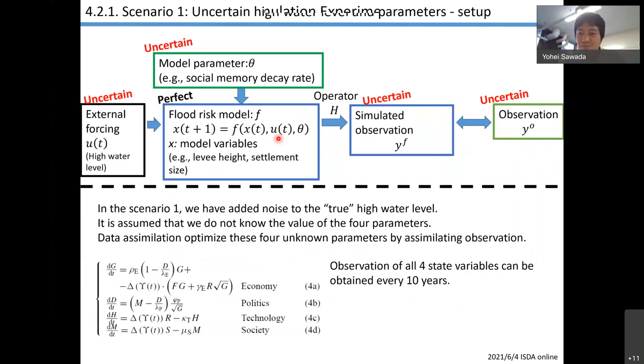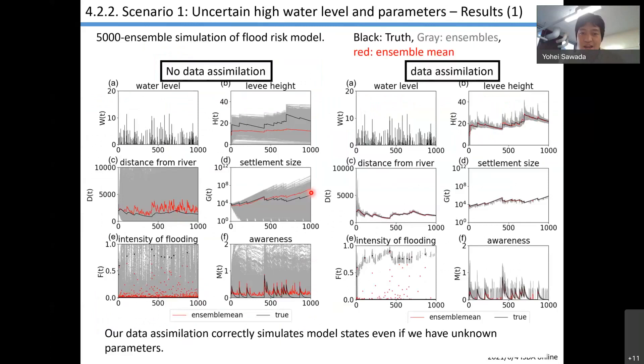The first scenario is similar to what I've done in Rome. We assume external forcing is uncertain and we have four unknown parameters. But here I assume we can get observation every 10 years. The uncertainty is really huge when we don't have any observation data because parameter uncertainty is huge. But when we assimilate the data, we can effectively constrain the model trajectory, as we showed in Rome city.